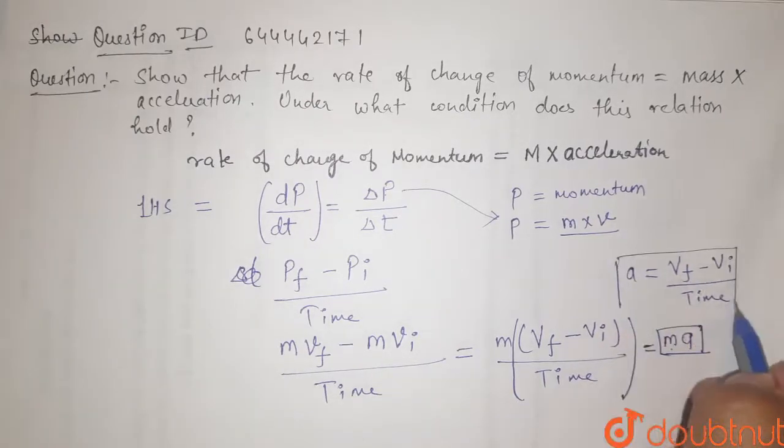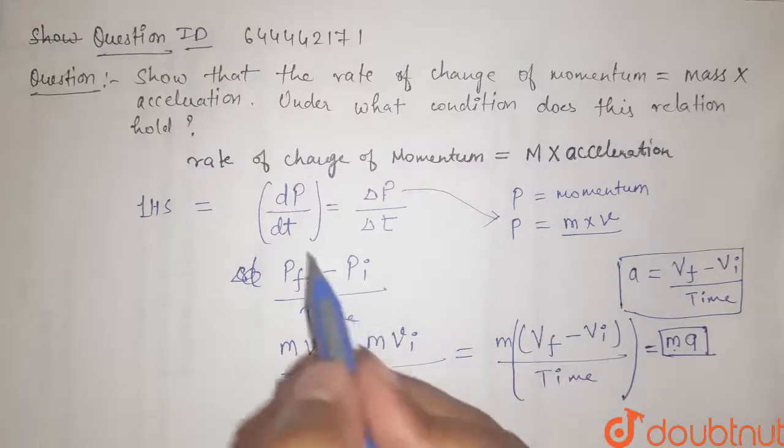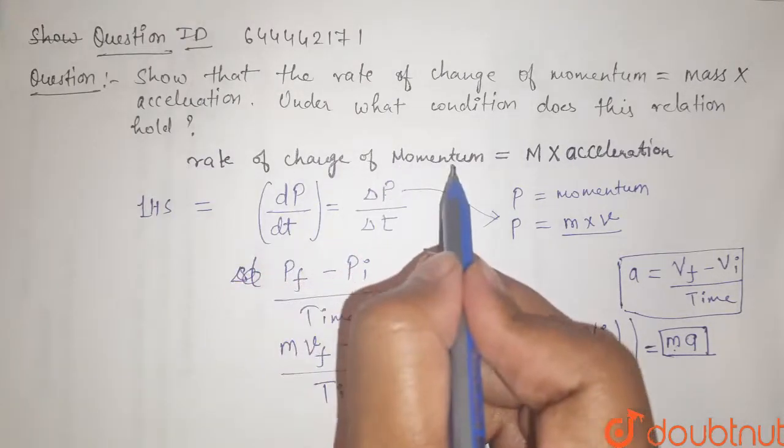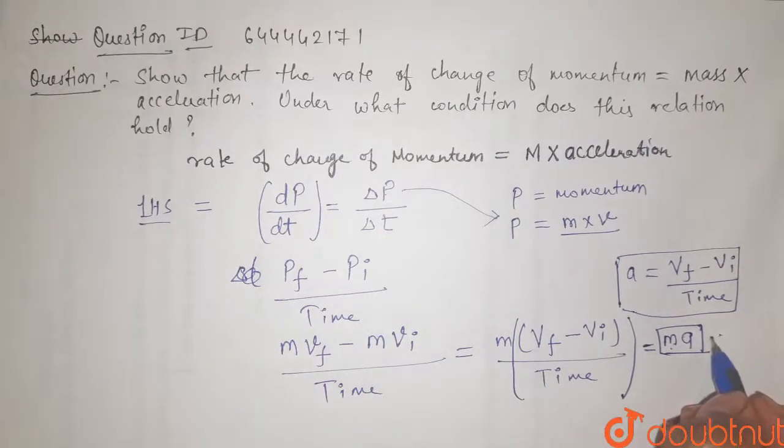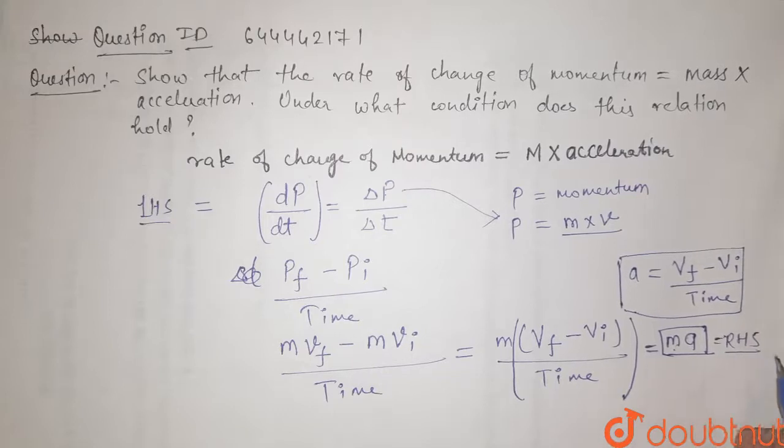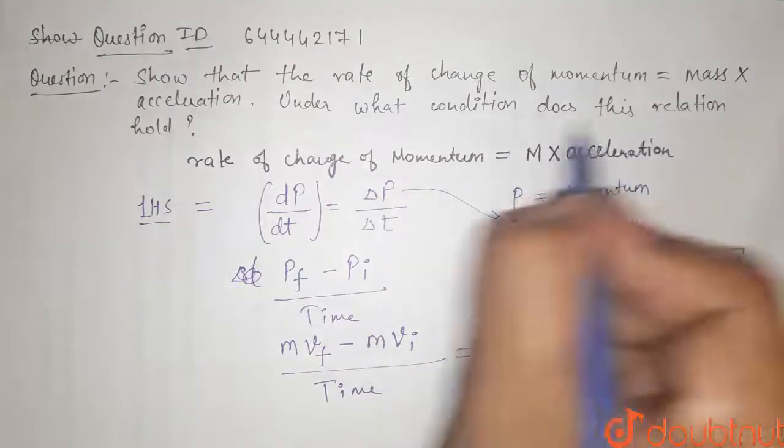So this is the required proof that the rate of change of momentum, we have taken LHS and then we have shown that it equals RHS, that is right hand side. So there is one more question. Under what condition does this relation hold?